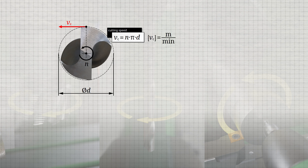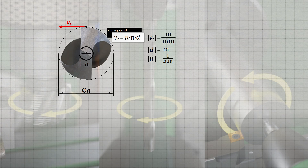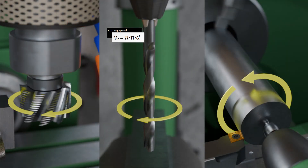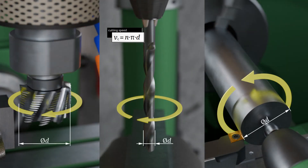In this case, the diameter must be used in meters and the spindle speed in revolutions per minute. The specified diameter refers to the outer diameter of the tool in milling and drilling, and to the diameter of the workpiece in turning.